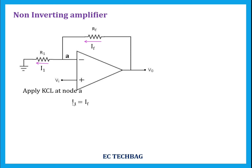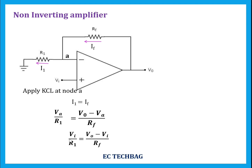I1 is the current through resistor R1, expressed as voltage divided by resistance. The potential at the node is Va, so I1 equals Va divided by R1. By the virtual short concept, Va equals Vi, so we replace Va with Vi. This gives Vi divided by R1 equals (V0 minus Vi) divided by Rf.